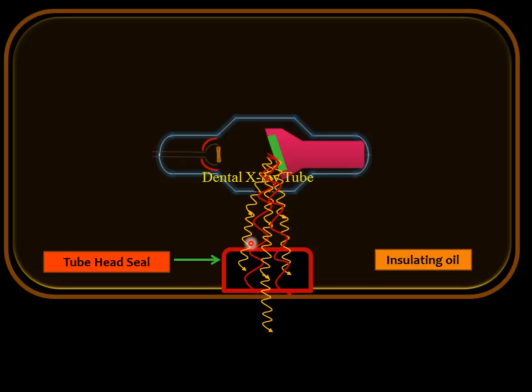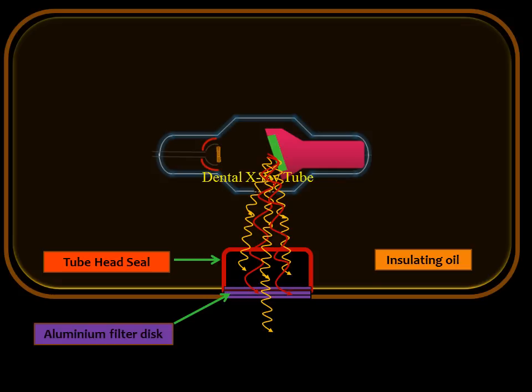The aluminum disc filters the low energy long wavelength x-rays and allows only the short wavelength high energy x-rays to pass through the x-ray tube head. At 70 kvp, a thickness of 1.5 millimeters of aluminum filters are used, and above 70 kvp we use 2.5 millimeter thickness of aluminum.